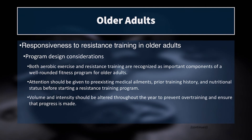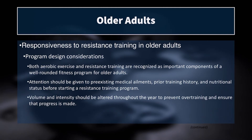Program design considerations for older adults: both aerobic exercise and resistance training are important components of a well-rounded program. Heart health is super important — cardiac arrest and cardiac disease are unfortunately very prevalent, and we have to combat that — but resistance training cannot be neglected. Attention should of course be given to pre-existing medical ailments, prior training history, and nutritional status. Our older adults come with a lot more training and injury history than your 20-year-old athlete.